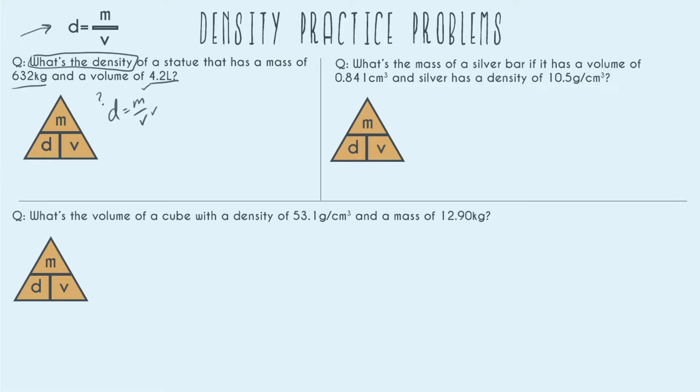So we're always going to use this same formula of D equals M over V and so in this case we're given the mass 632 kg, we're given the volume 4.2 liters so in our formula, which will always be the same, we have mass, we can check that off and we have volume.